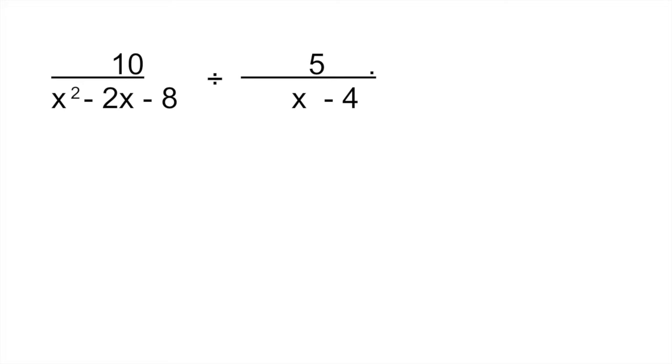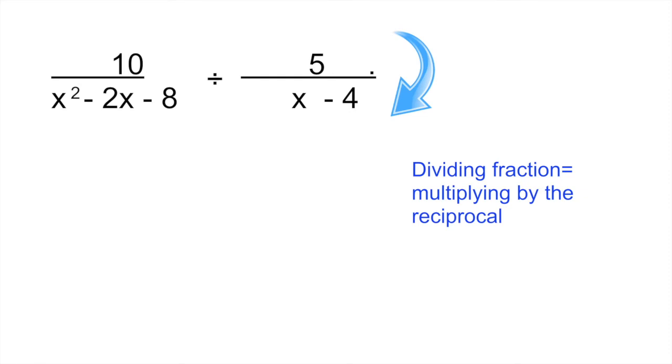So it tells you 10 divided by x squared minus 2x minus 8 divided by 5 divided by x minus 4. What you have to remember here is that whenever you are dividing fractions by each other, dividing a fraction is the same as multiplying by the reciprocal. So what is the reciprocal? The reciprocal is when you take the second fraction and you flip it. So instead of having 5 divided by x minus 4, you're going to have x minus 4 divided by 5. And instead of dividing, you are now multiplying. So this is what is known as multiplying by the reciprocal.